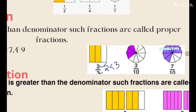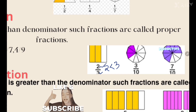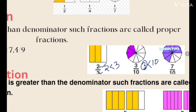So this one is called a proper fraction. Here there are ten equal parts; from ten equal parts three parts are shaded, so it is three upon ten, and three is less than ten. When the numerator is smaller, that fraction is called a proper fraction. The unit fractions we saw earlier are also proper fractions, because one is less than two, one is less than four, one is less than seven.